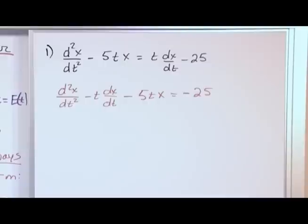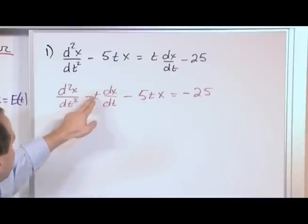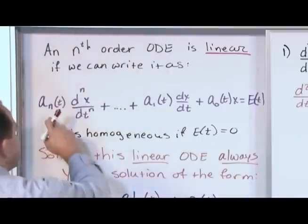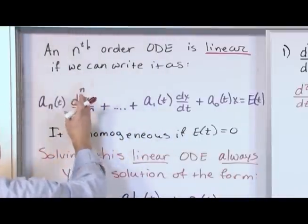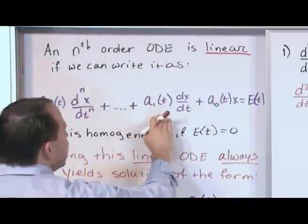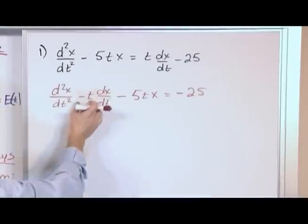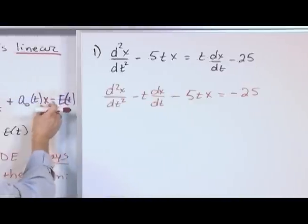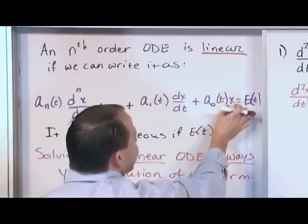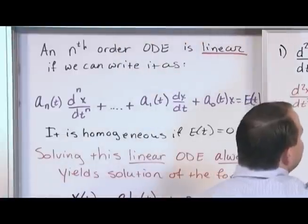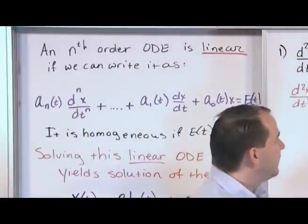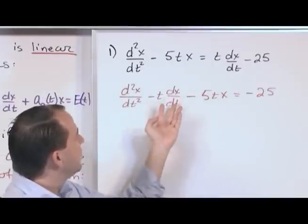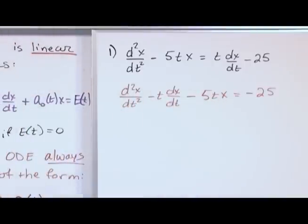So this part so far makes sense. The next term I have dx dt, and I have a function of time, a function of my independent variable right in front, which follows in line with how it would go, second derivative, first derivative, and so on. Here's the first derivative, here's my function of time, so it totally matches up there. The next term has a plane x by itself, which is what we have here. You're allowed to have a function of time in front of this x. Well, 5t is a function of time. So I have satisfied everything on the left-hand side. I have second derivative, first derivative, no derivative. Each one of them has a function of time in front, which totally matches everything here.